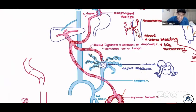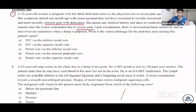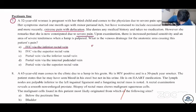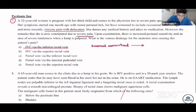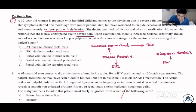The inferior rectal vein drains into the inferior vena cava. The answer is A — inferior vena cava. This case involves an external hemorrhoid, and they are asking where it drains: inferior rectal vein drains into the IVC. The superior rectal vein, by contrast, drains into the portal system — that corresponds to internal hemorrhoids.